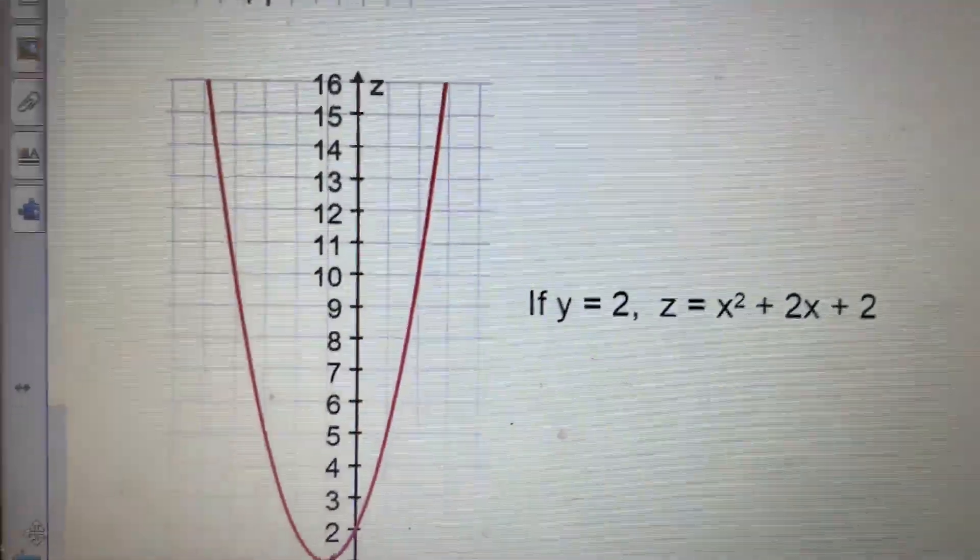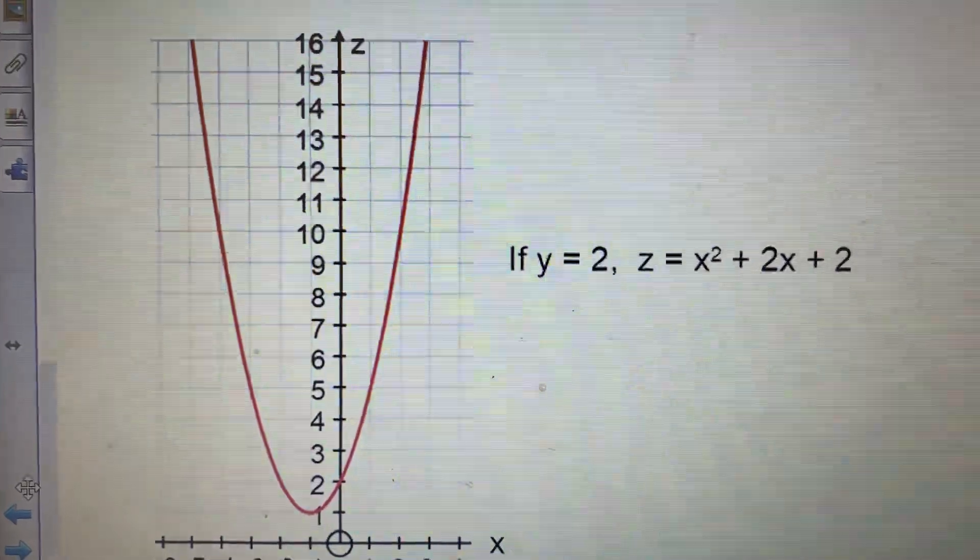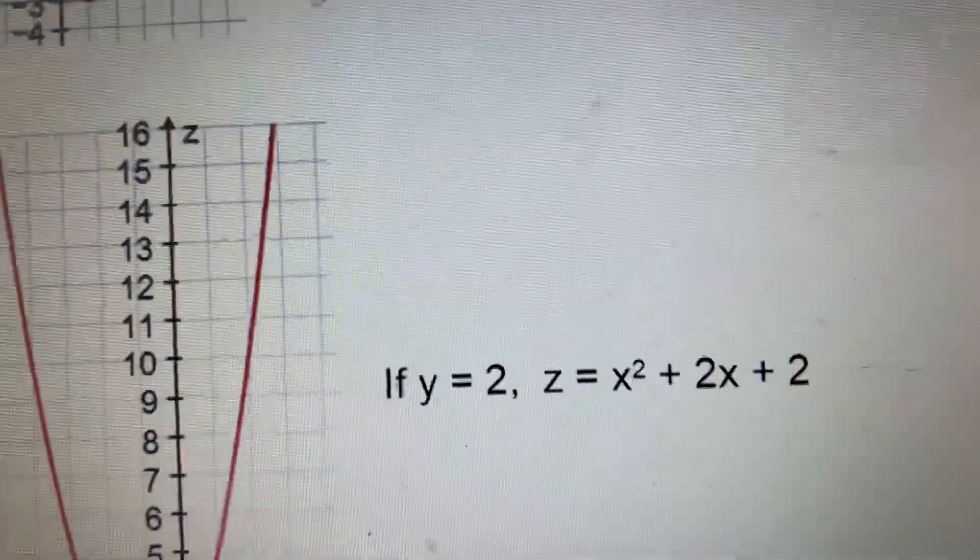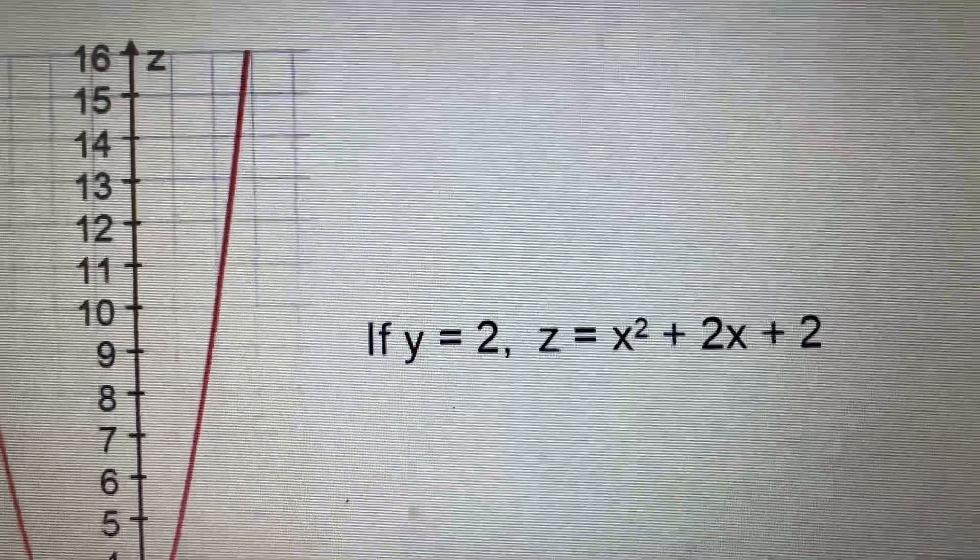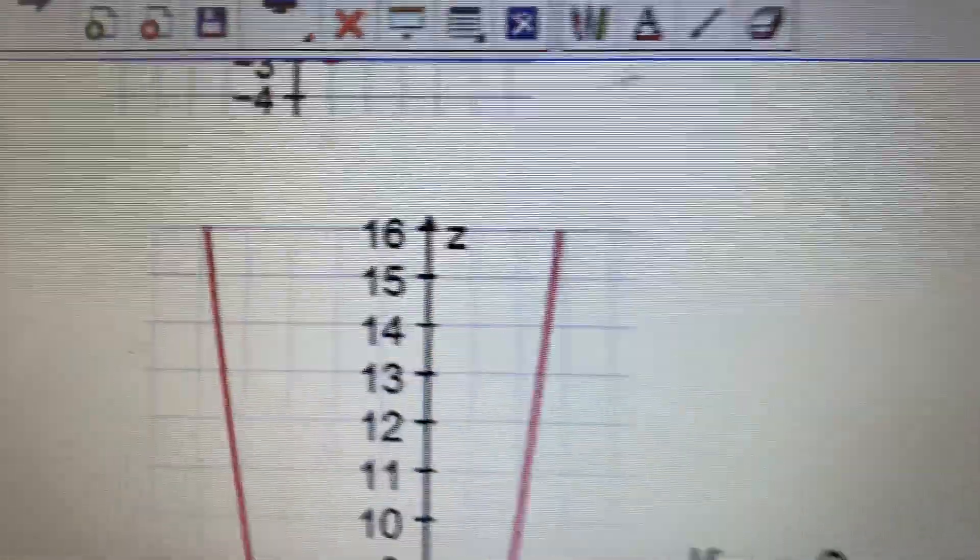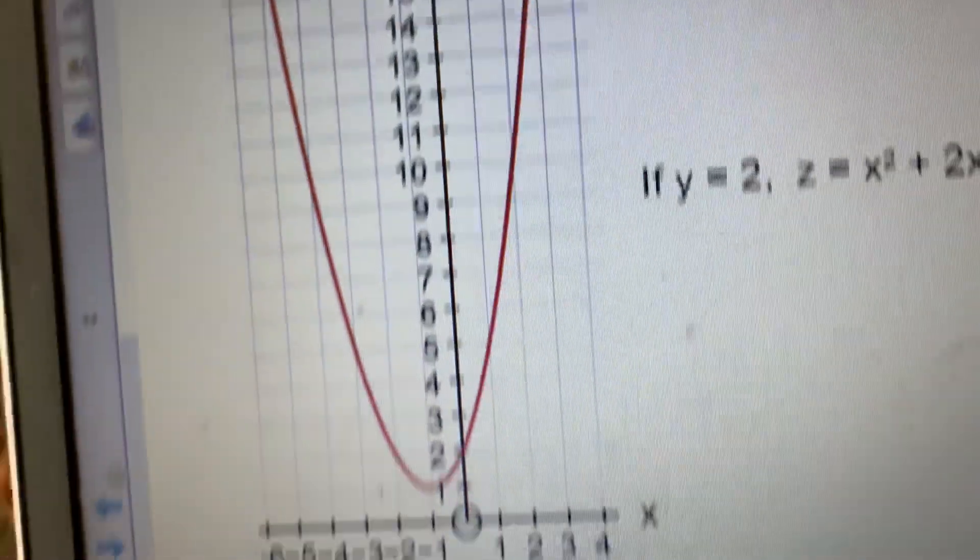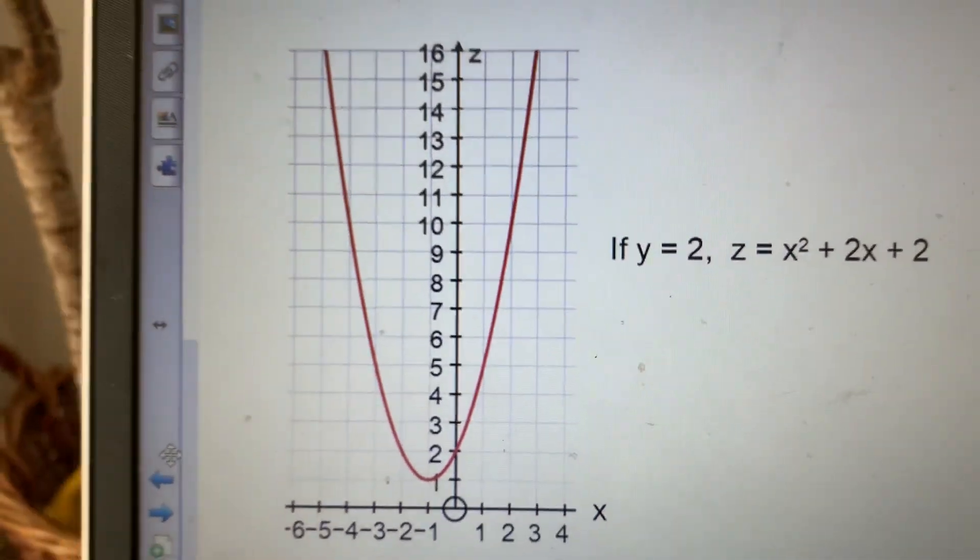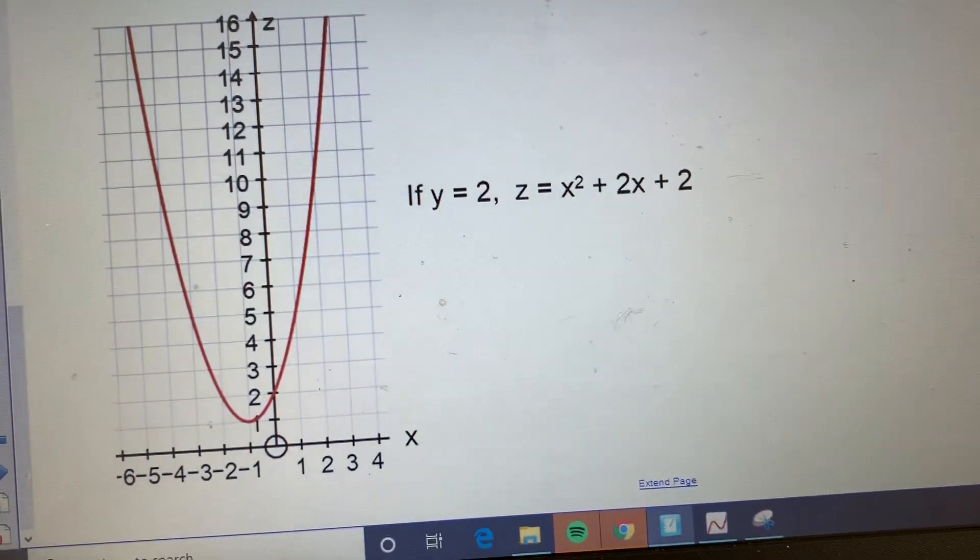So you just plot it and it's as though you can put that in your graphical calculator where it's like plotting Y equals X squared plus 2X plus 2, but your graph is labeled Z against X. So that's what it's going to look like.